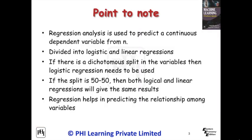Consider an event E which is influenced by N number of independent variables. Regression analysis is used to predict a continuous dependent variable from N. Regression can be divided into logistic and linear regressions. If there is a dichotomous split in the variables, then logistic regression needs to be used. If the split is 50-50, then both logistic and linear regressions will give the same results.